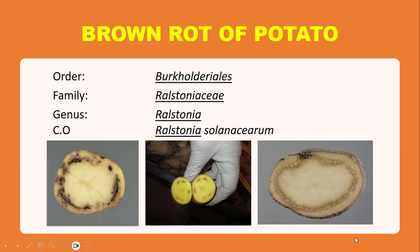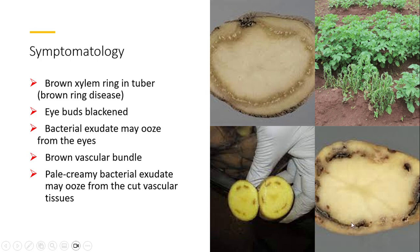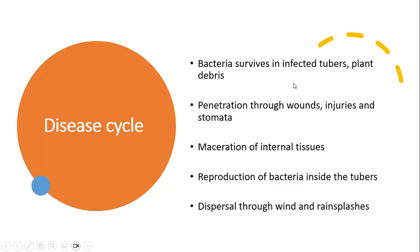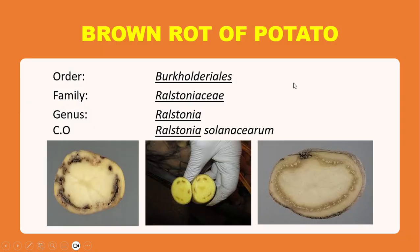The next disease is brown rot of potato, caused by Ralstonia solanacearum. Ralstonia belongs to the order Burkholderiales and the Ralstoniaceae family.